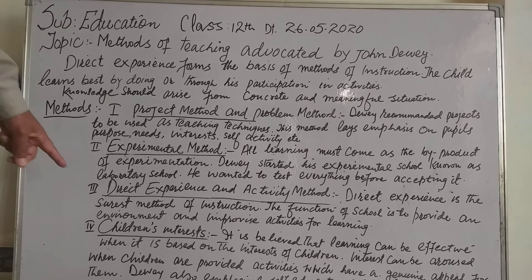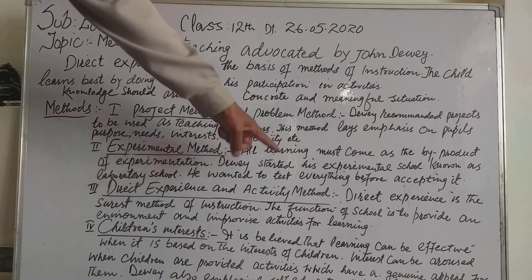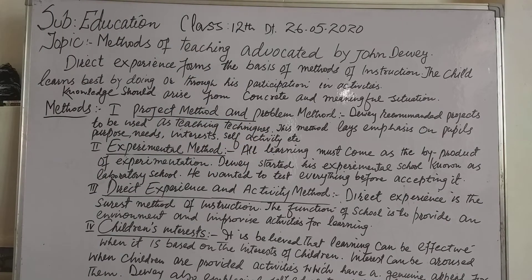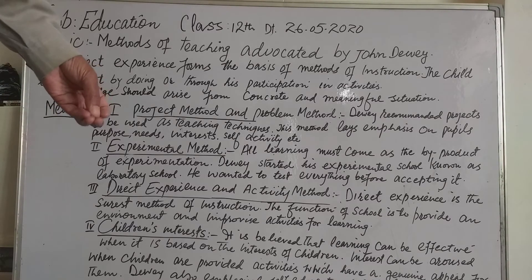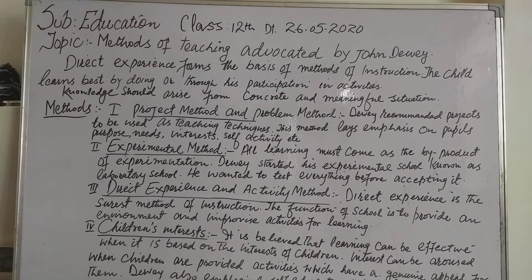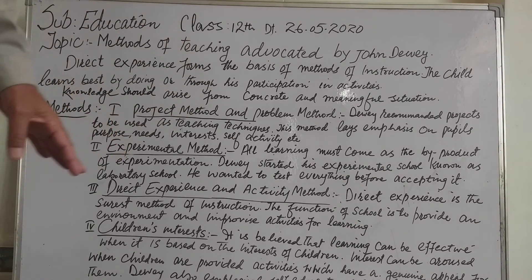Number three: direct experience and activity method. Direct experience is the surest basis of all methods of instruction. The function of school is to provide an environment and improvise activities for learning through the use of their senses.